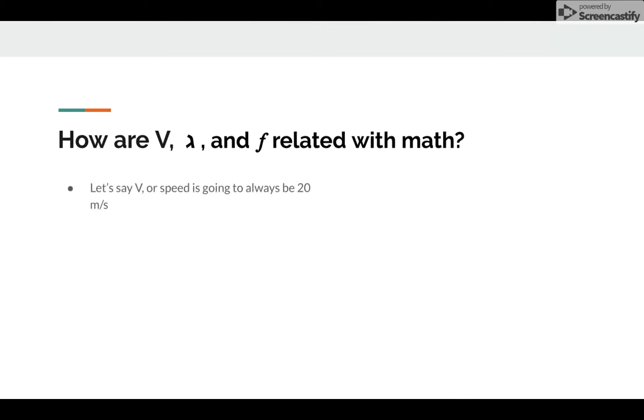So let's say, for instance, velocity or speed of our wave is always going to be 20 meters per second. So what would be possible numbers for wavelength and frequency to equal 20 meters per second? Don't mind the typo. That's supposed to say 20. 20 meters per second could be 10 meters times 2 hertz. It could be 5 meters times 20 hertz. It could be 20 meters per second equals 2 meters times 10 hertz.